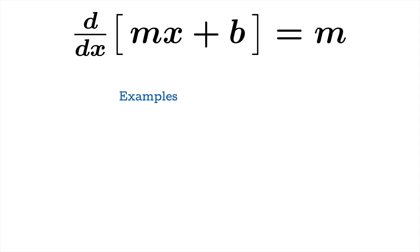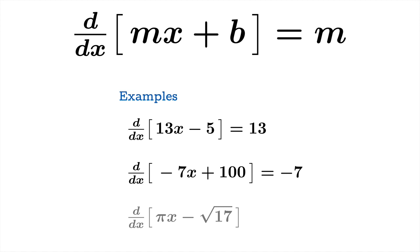So let's look at some examples. When you see something like 13x minus 5 and you want to take the derivative with respect to x, well you should instantly, I mean no hesitation, you know that that derivative is 13. Derivative of this linear function is just negative 7. Derivative of this linear function, it looks a little more exotic, but that derivative is just pi. So these are all derivatives you should be able to do instantly.